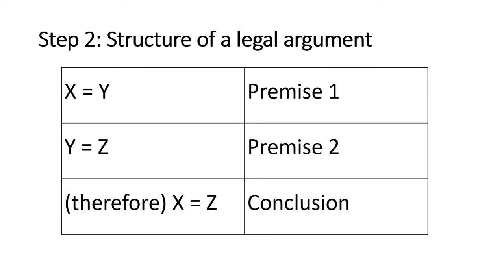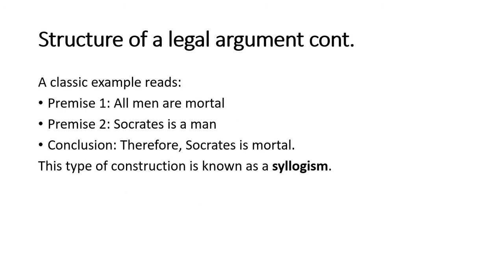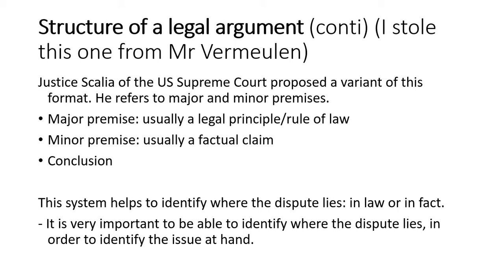Step number two: the structure of the legal argument. Premise one and premise two, then conclusion. Premise one is the most important information — always put the most important information at the beginning of the sentence. Then you follow with premise two, and then you put in the conclusion. Here's a classic example: all men are mortal; Socrates is a man; therefore, Socrates is mortal. This type of construction is also known as syllogism — it's also known as the structure of legal argument.